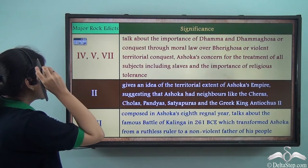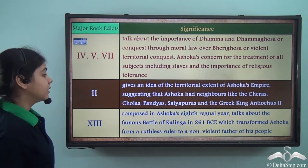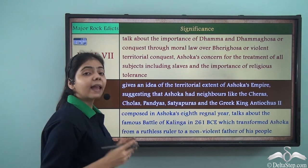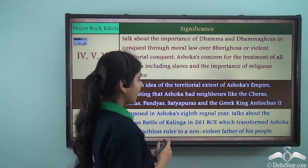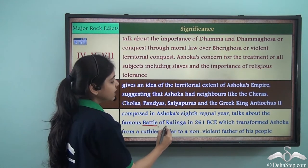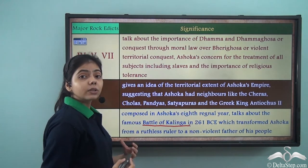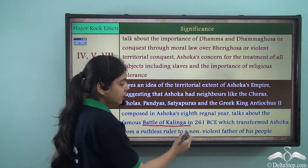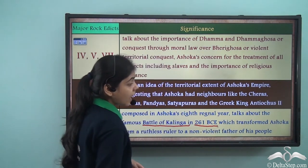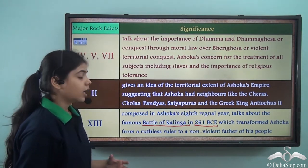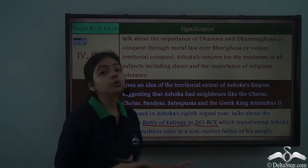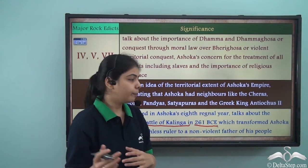The major rock edict 13 was composed in Ashoka's 8th regnal year and talks about the famous Battle of Kalinga, which was fought in 261 BCE, after which Ashoka transformed from a ruthless ruler to a fatherly emperor.